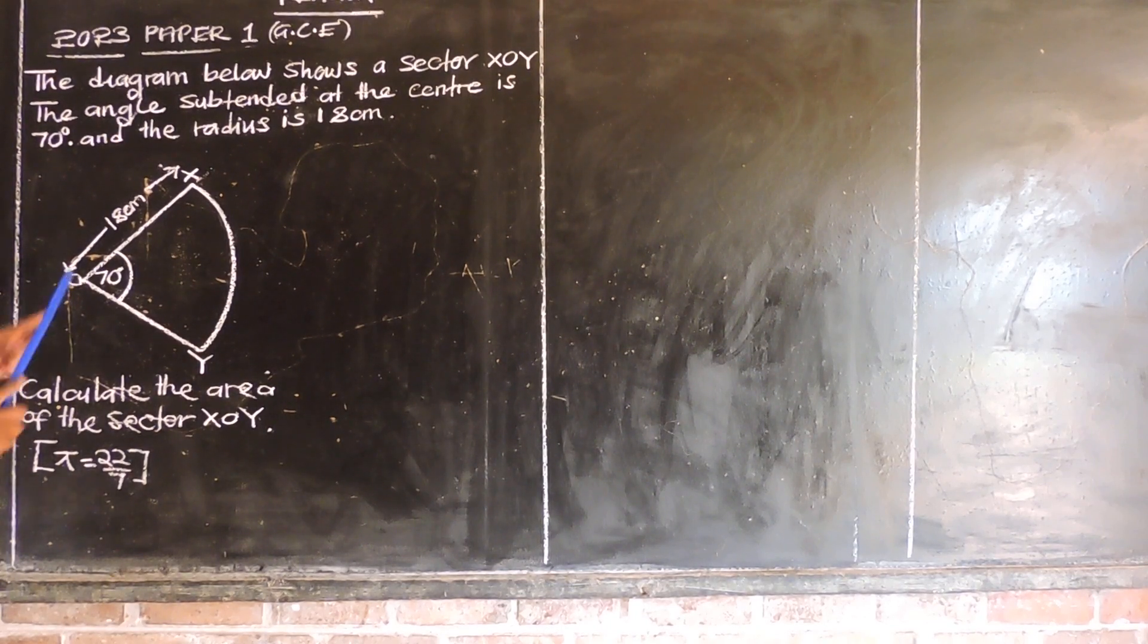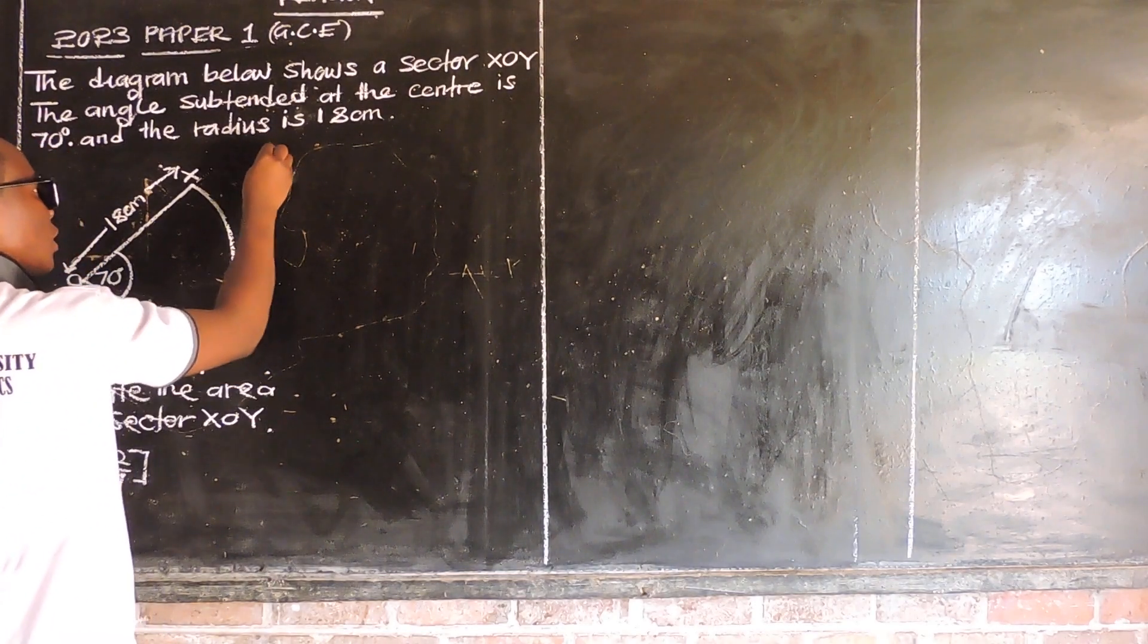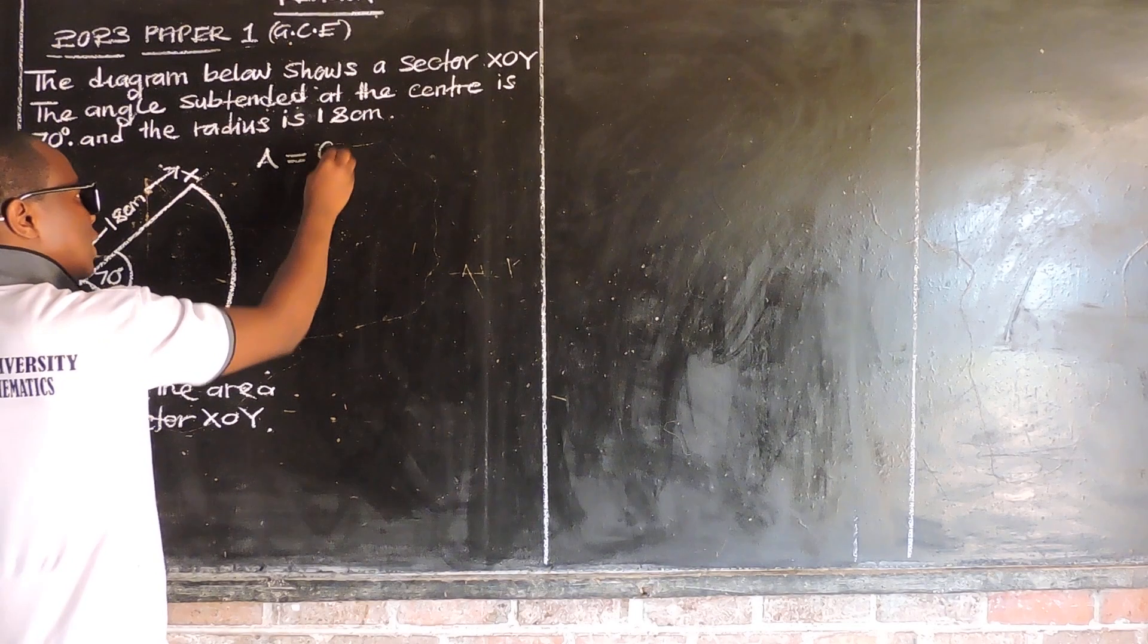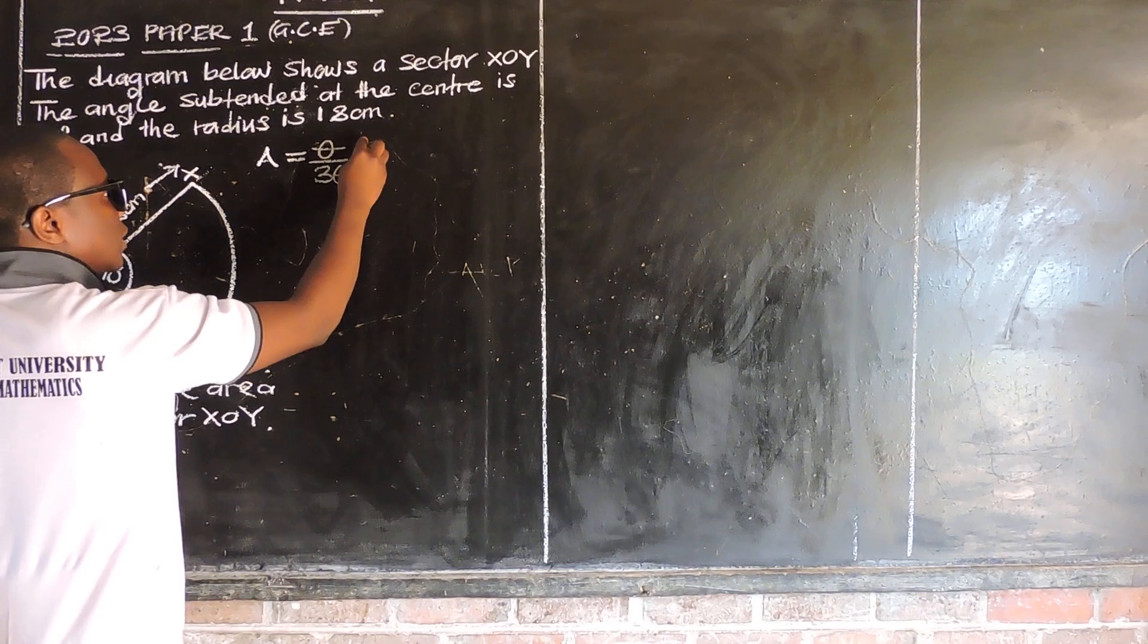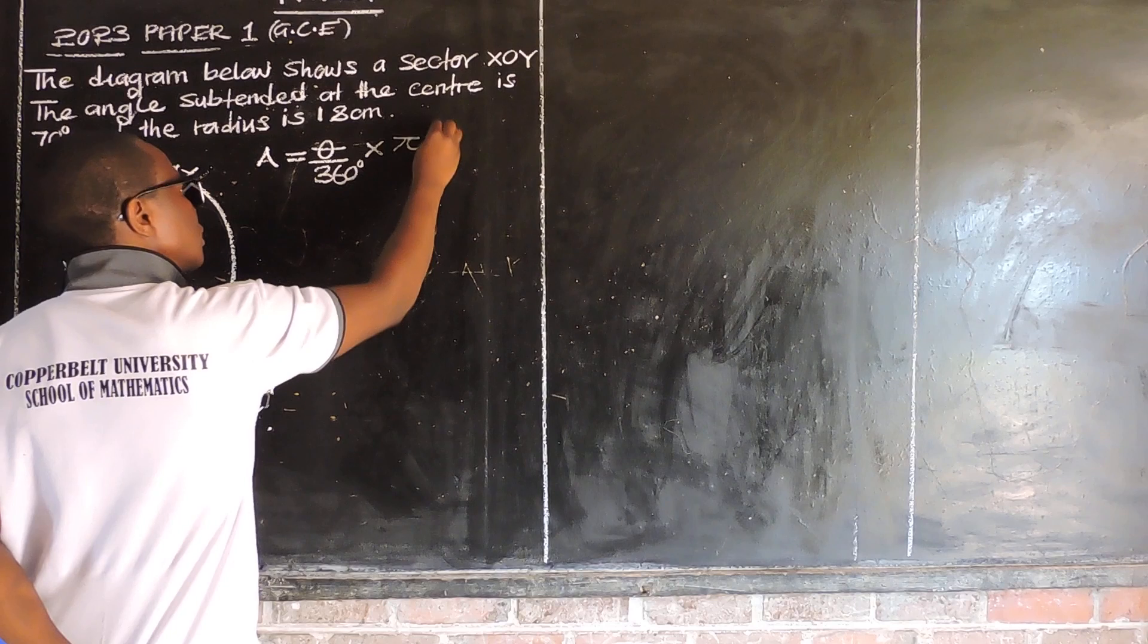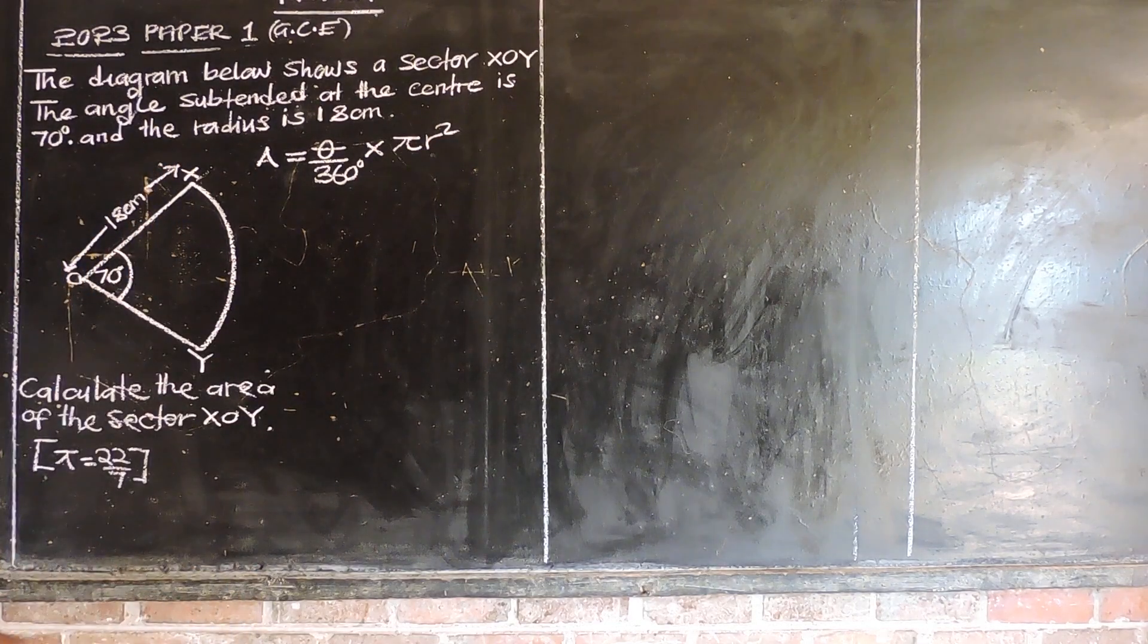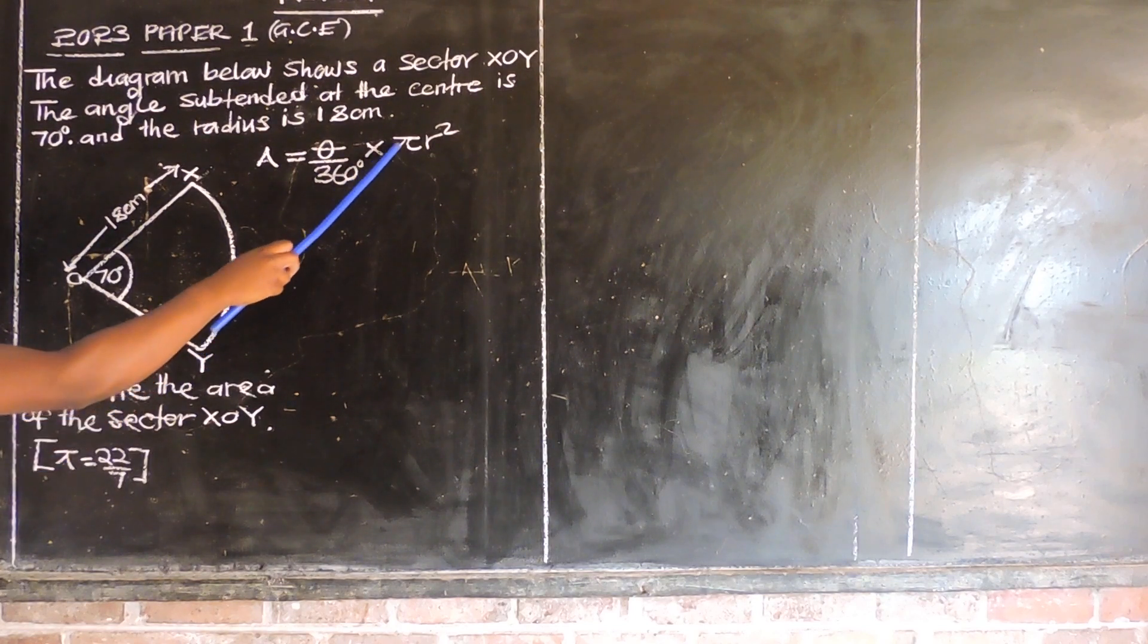Radius of the sector is 18 centimeters and the angle subtended at the center is 70 degrees. So we know the formula first and foremost, we write the formula for finding area of the sector. Area of the sector is given by theta over 360 degrees multiplied by pi R squared.